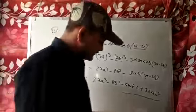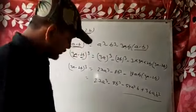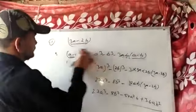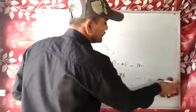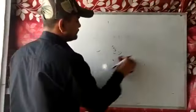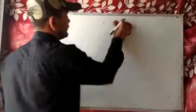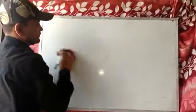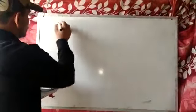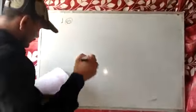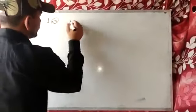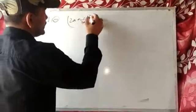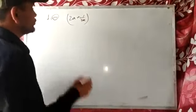Question number 2 is very easy — I hope you can solve it as homework. Try it at home; if you face any problem, write in the comment box and I will solve it. Question number 3: find the cube of 2a plus 1 by 2a.